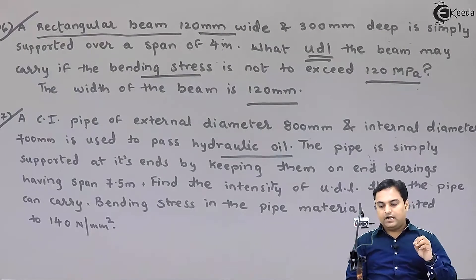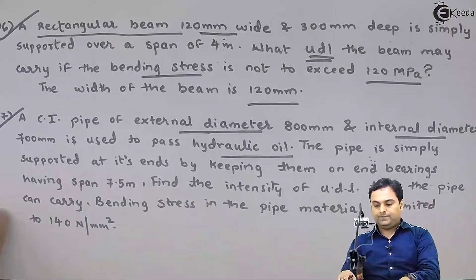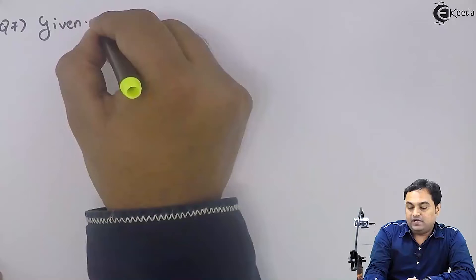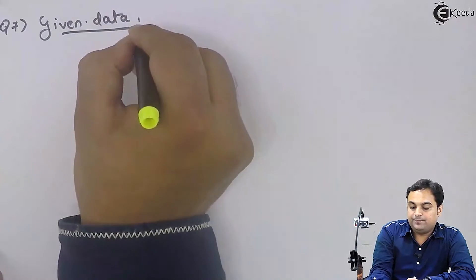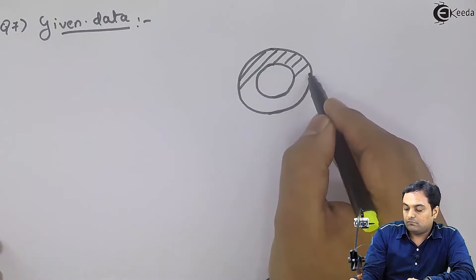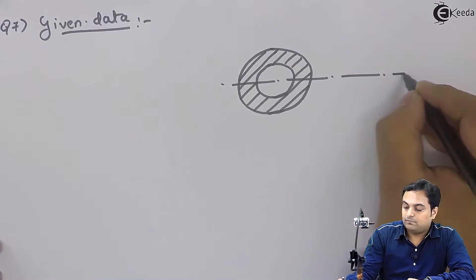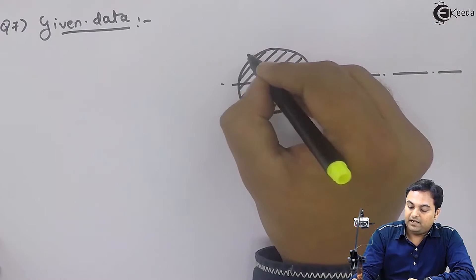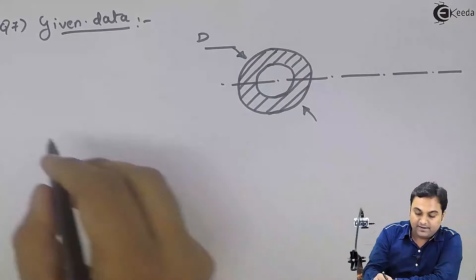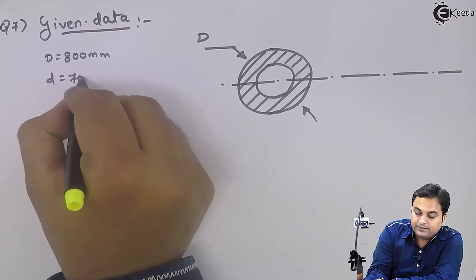We will take this question's data in structured form. The section given here is a hollow circular section — external diameter is 800 mm and internal diameter is 700 mm. Since it is a hollow circular section, I'll draw the section showing external diameter 800 mm and internal diameter 700 mm.